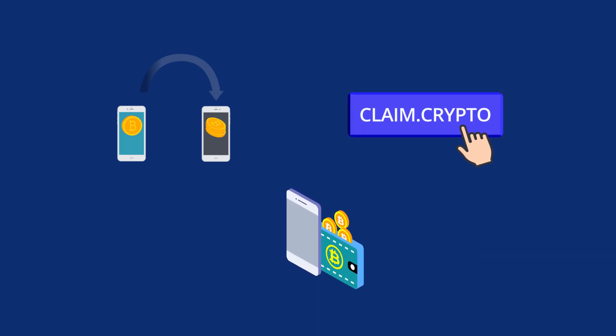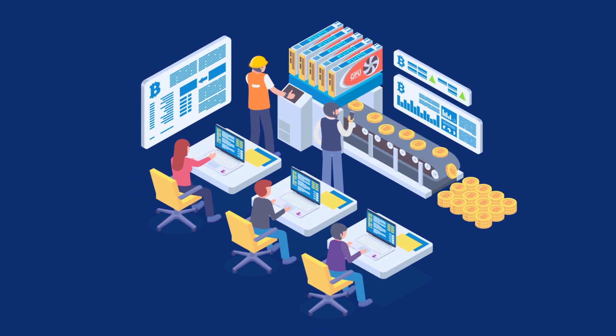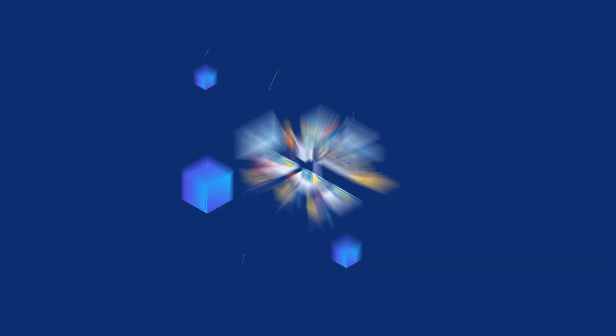Meaning every time you send a transaction — such as when you exchange a cryptocurrency, claim a domain, or connect a wallet — each individual transaction has to go through miners, be processed on the chain, and after the transaction is mined, get recorded on the blockchain.